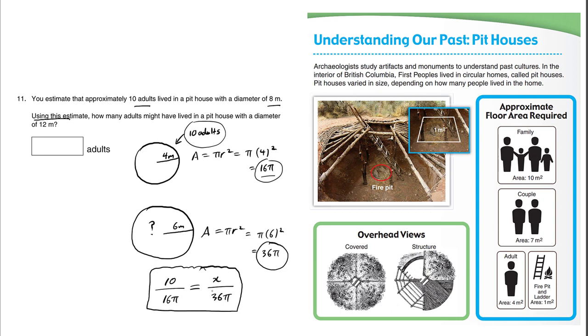You could cross multiply, or you could even multiply both sides by 36 pi. Let's multiply both sides by 36 pi. Because we multiplied both sides by 36 pi, the 36 pi on the right-hand side here cancels out with the bottom 36 pi.